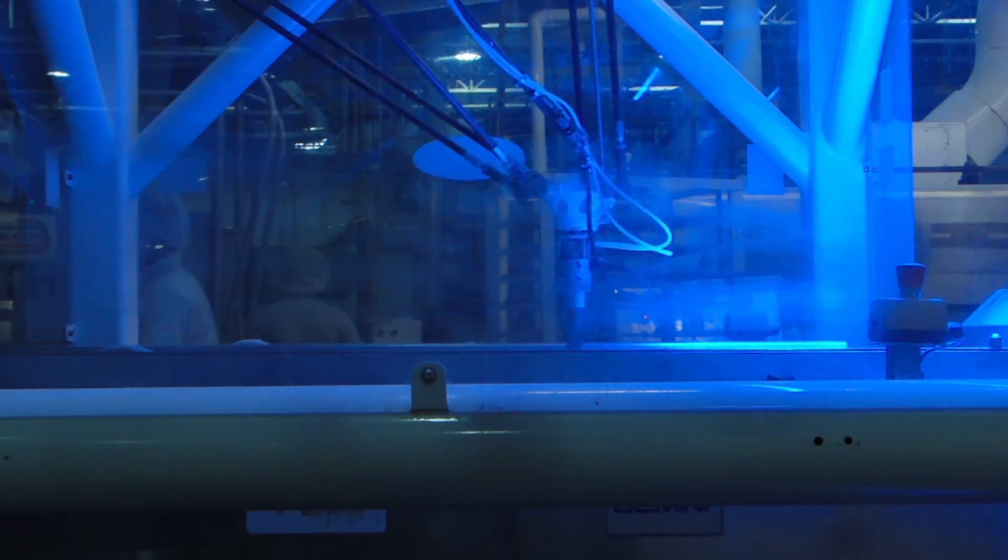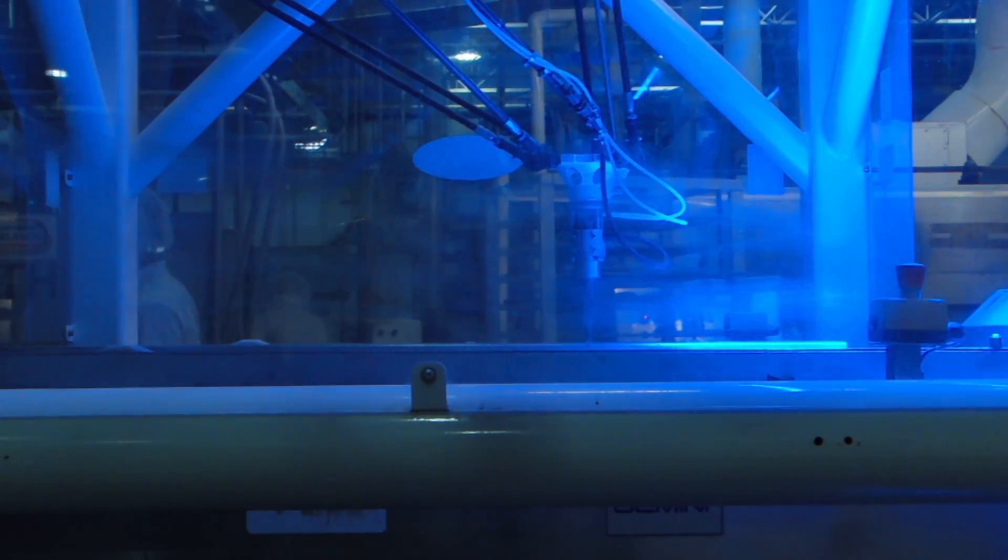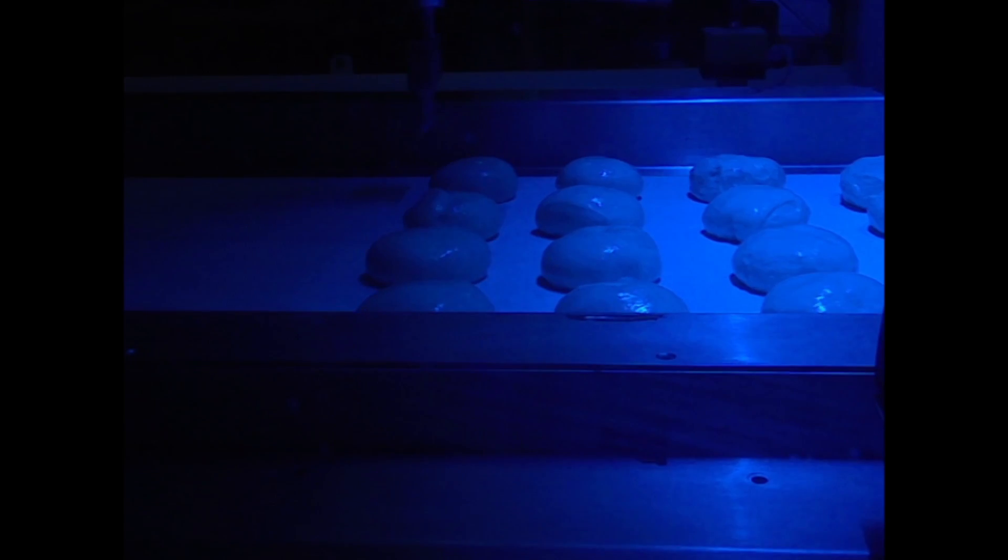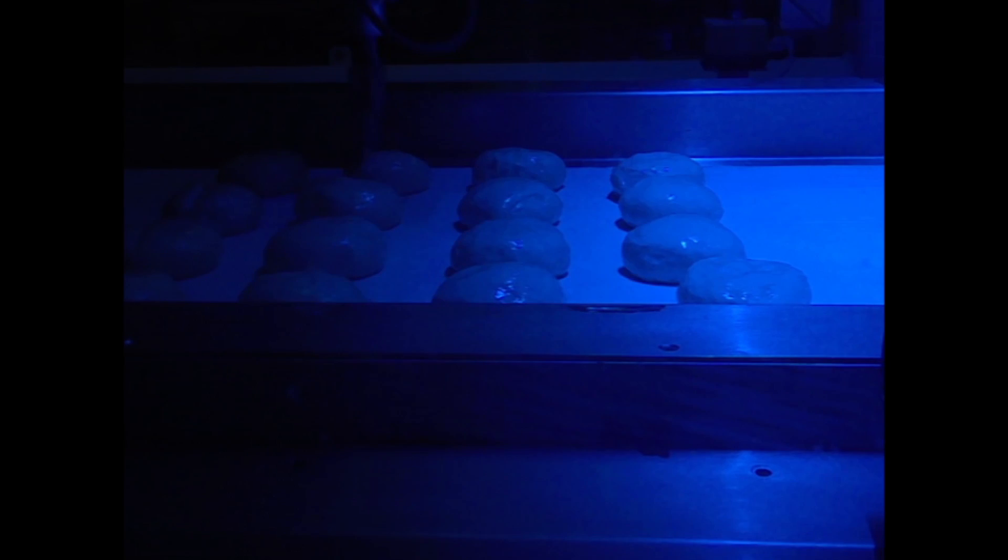For other automated bread scoring systems, The Perfect Score utilizes a variety of cutting technologies, some of which may include rotary blades, ultrasonics, razor blades, and water.